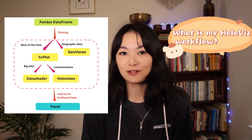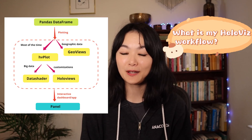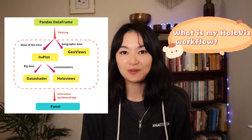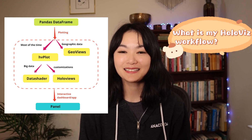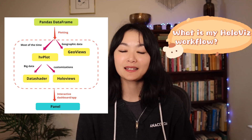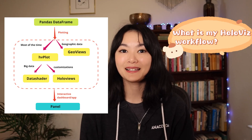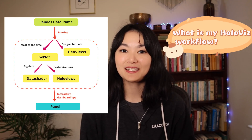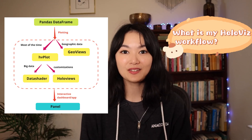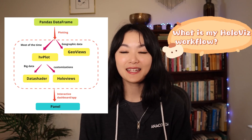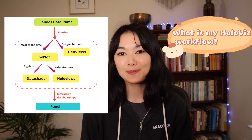With all those seven libraries, here is my HoloViz workflow: I usually start with a pandas data frame or a Dask data frame. For geographic data, I use GeoViews. Most of the time, I only use HVplot. Then, if I need to plot big data with millions or billions of data points, I use DataShader. If I need different customizations, I use HoloViews. I can then build my dashboard or apps with Panel.